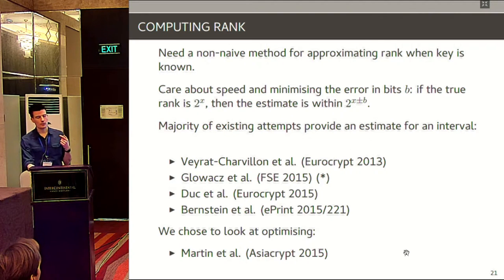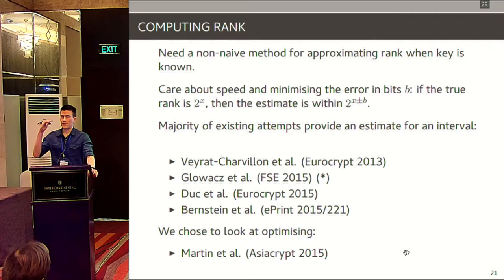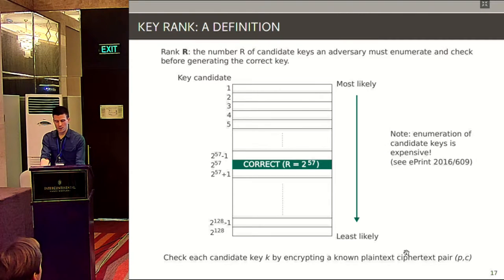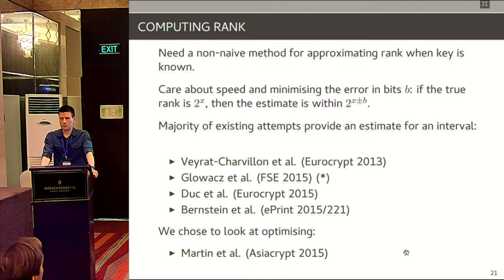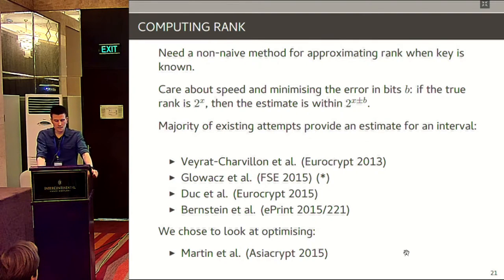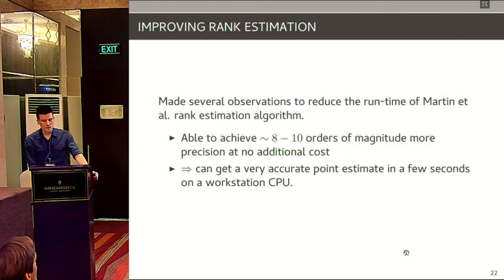Before going into results, evaluators need a way to determine rank without checking every single key in turn. Because the evaluator knows the key, that information can be used to get a fast approximation of the rank. Starting from EuroCrypt 2013, people have tried to define methods for this. The majority provide an interval estimate. At AsiaCrypt last year, a colleague Dan described an algorithm providing a point estimate, which we think is fast and accurate. As part of this work we spent time trying to make it better.